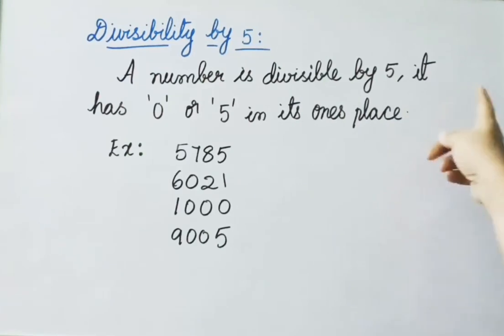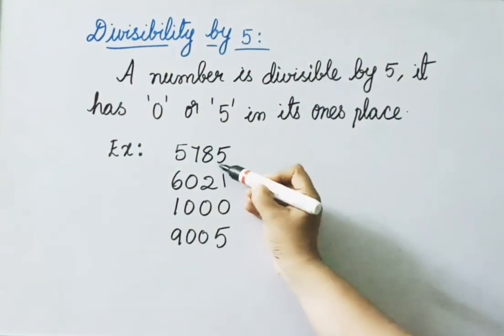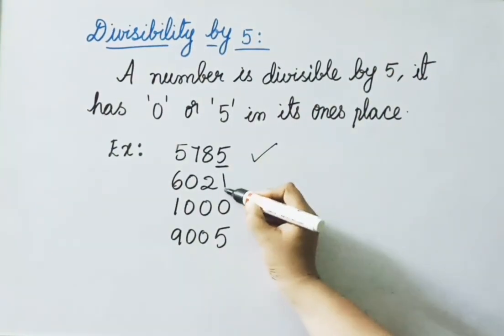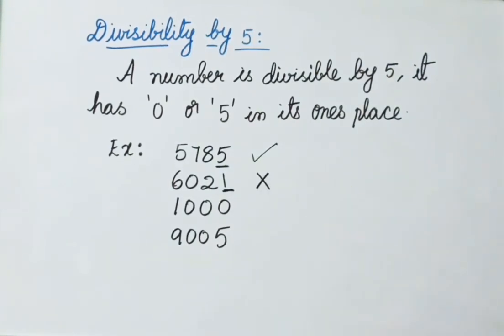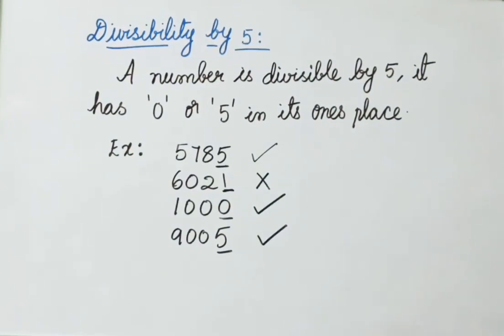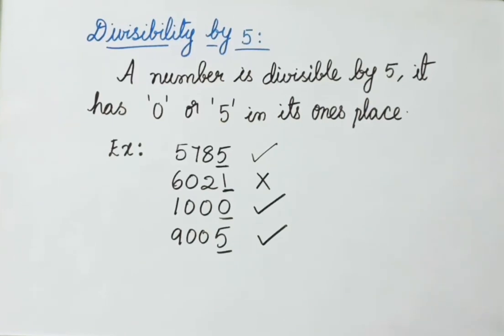Divisibility by 5: A number is divisible by 5 if it has 0 or 5 in its ones place. For example: 5785 has 5 in ones place, so it is divisible by 5. 6021 has 1 in ones place, so it is not divisible by 5. 1000 has 0 in ones place, so it is divisible by 5. 9005 has 5 in ones place, so it is also divisible by 5.